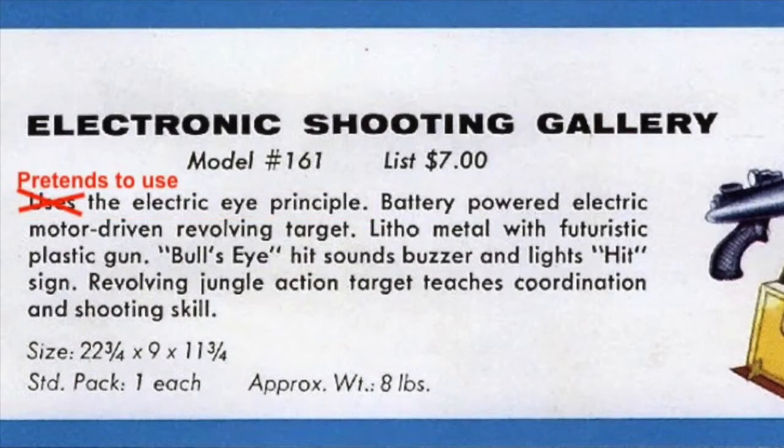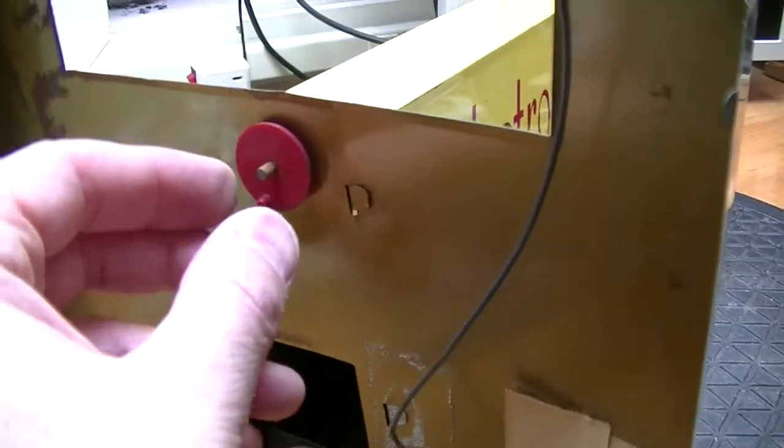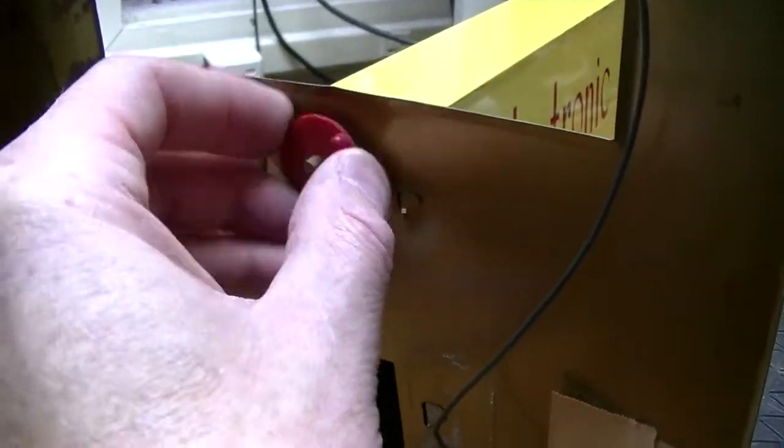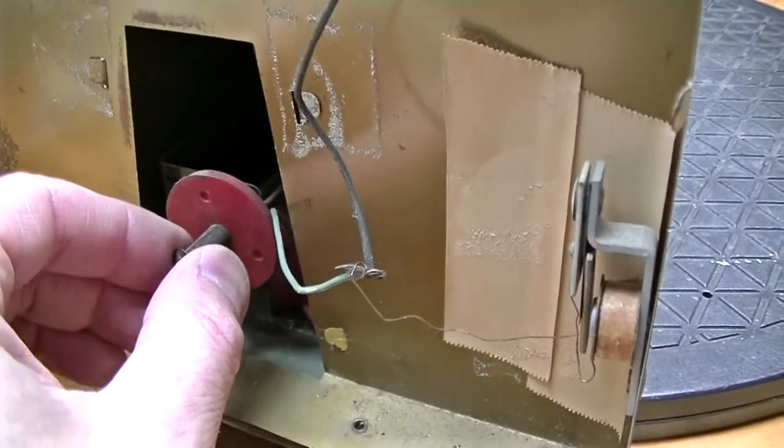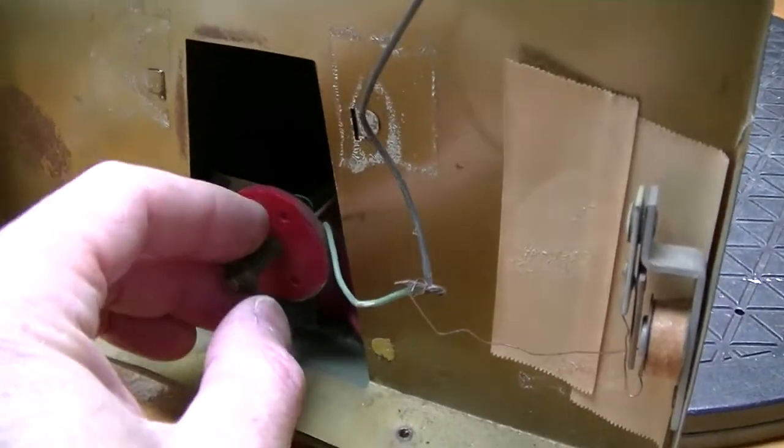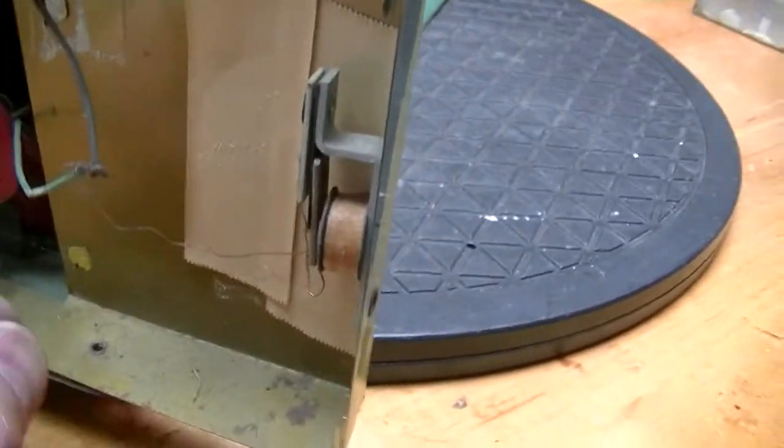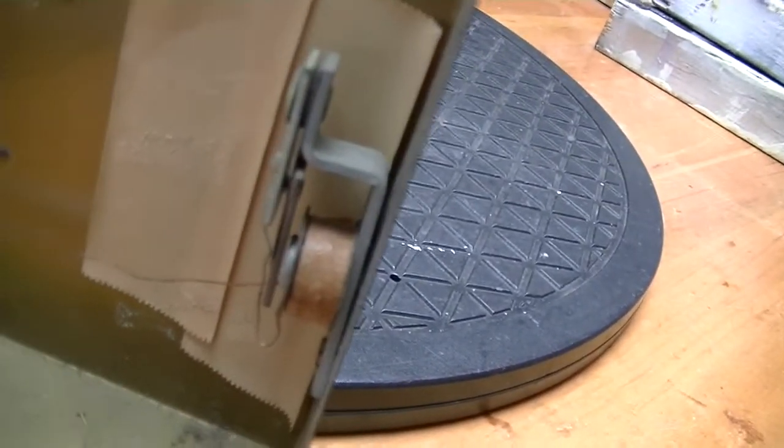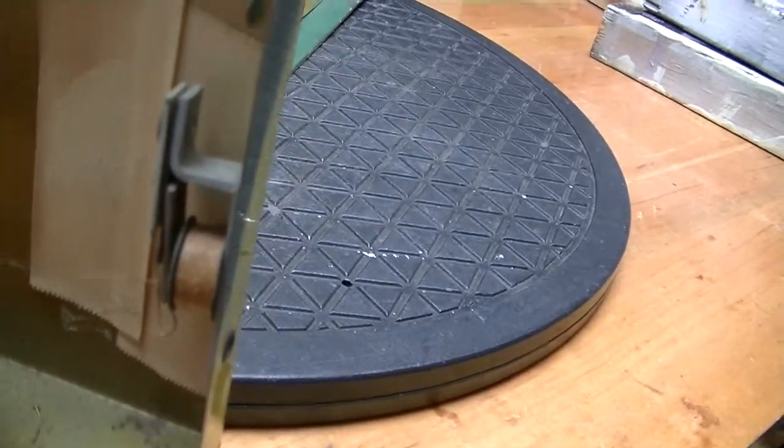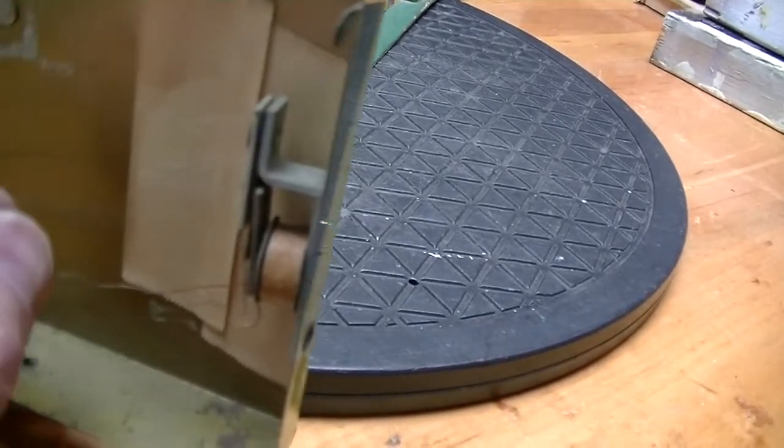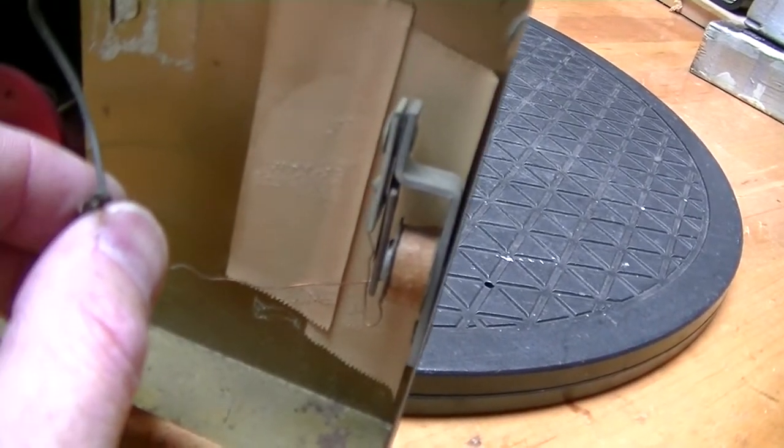So how does this thing work? It looks like the disc sits on this, and the motor turns it with friction on this end here. Also, there's a buzzer. It appears to be connected up to the bulb. When the bulb lights, it also energizes the buzzer. It's worth giving it a try to see if that works.